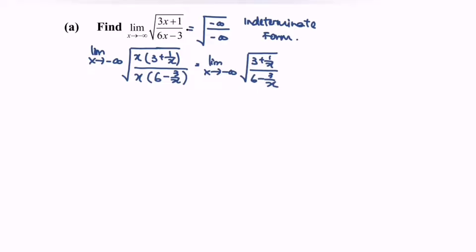Do remember: if we have 1 over infinity, we get 0. Substituting negative infinity, the terms 1/x and 3/x both approach 0. So as a conclusion, substituting negative infinity gives us square root of 3 over 6.